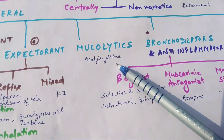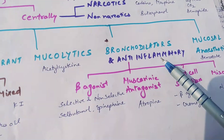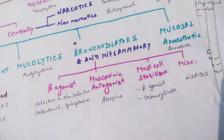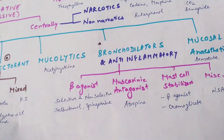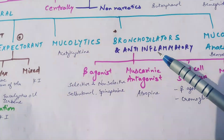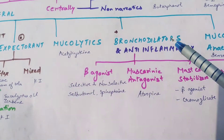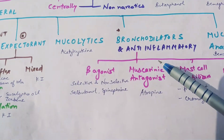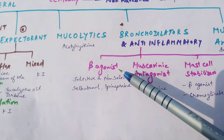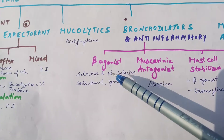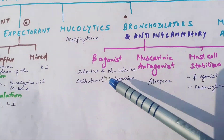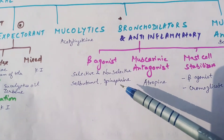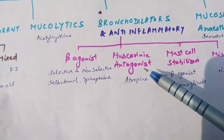Next is mucolytics, which break down mucus, like acetylcysteine. Then bronchodilators and anti-inflammatory drugs — this is a very important classification. In bronchodilators and anti-inflammatory, there will be vasodilation and anti-inflammatory action. It divides into beta agonists — selective and non-selective: salbutamol is selective, and epinephrine or ephedrine are non-selective beta agonists.